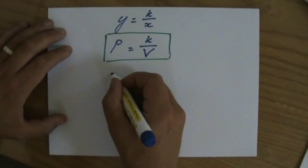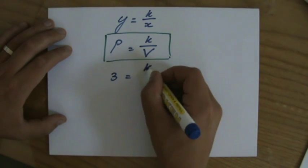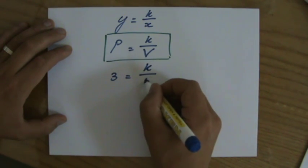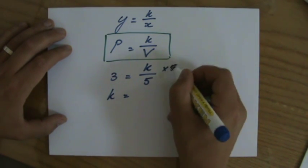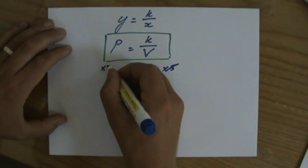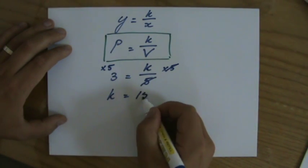So P equals 3 when the volume equals 5. So that constant then equals 3 times 5. So that is going to be 15.